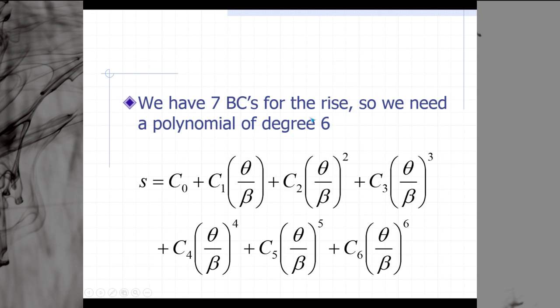Since we have 7 boundary conditions for the rise and fall, we will need a polynomial of degree 6. Here we have our generic position equation, where we have a degree of 6, meaning that 6 is the highest power that we see. Our position is equal to c0 plus c1 times theta over beta, plus c2 theta over beta squared, and so on until we get to c6 theta over beta to the 6.